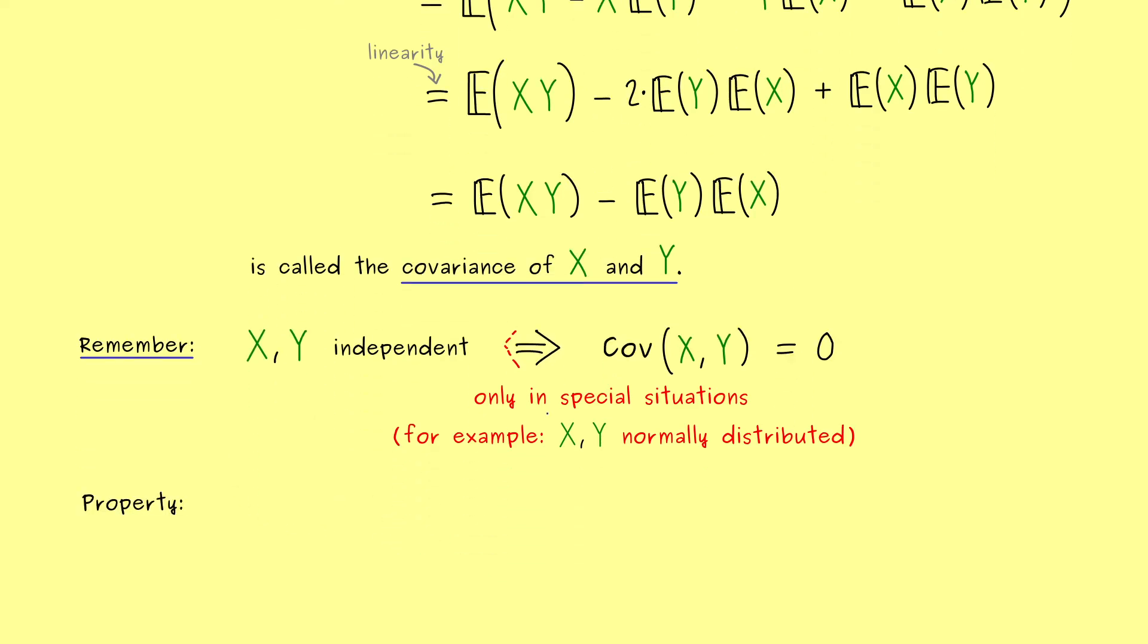There, the covariance might be misleading, because X and Y for themselves could already have very big variances. Therefore, we need some kind of normalization to actually get a measurement for uncorrelated variables.